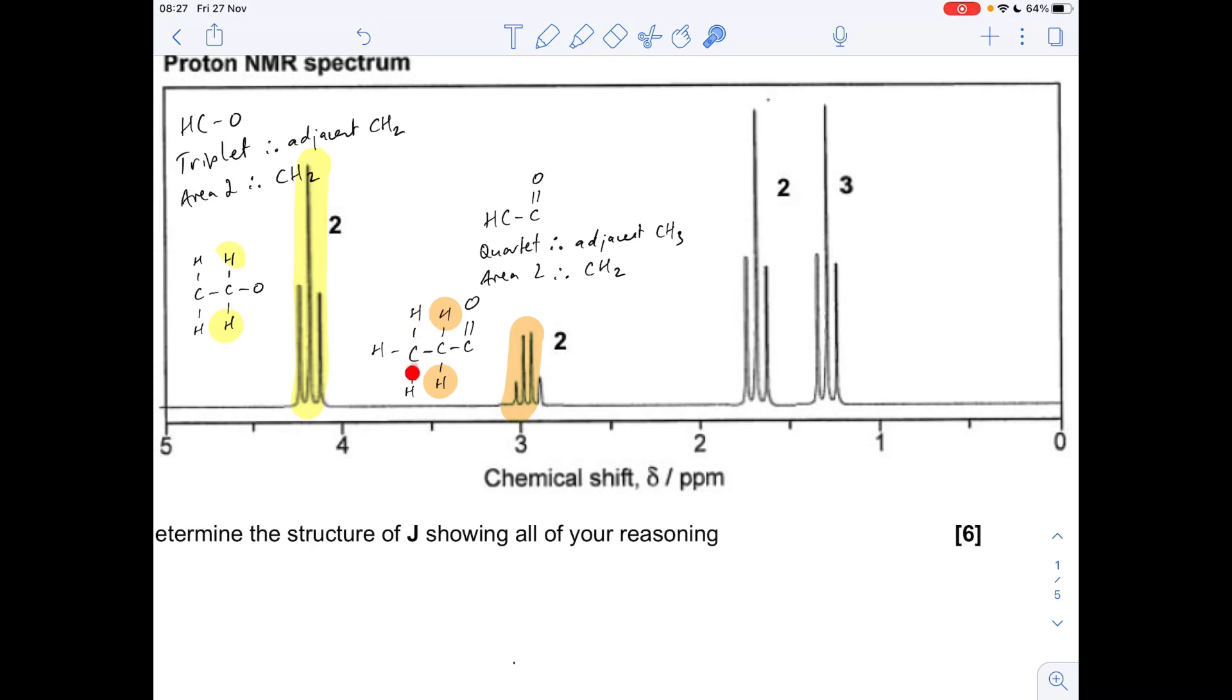Moving on to this one at 1.6 to 1.7 ppm, that's an HCR environment. It's a triplet, so there's an adjacent CH2, and it's area two, so it's a CH2 causing this. That ties in with this here, doesn't it? We've got two in the environment adjacent to two. If I highlight those in pink, that signal there is caused by those two protons.